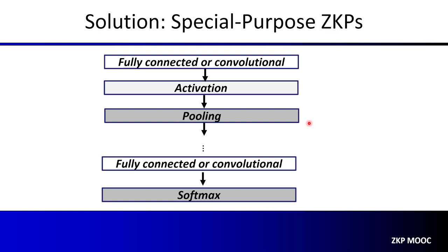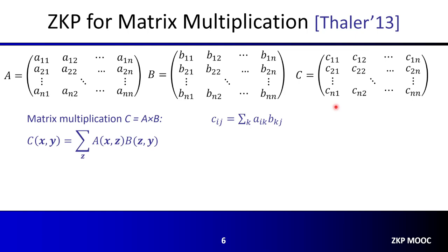The potential solution is to actually design special-purpose zero-knowledge proofs for common computations involved in machine learning algorithms. For example, in a neural network we have fully connected layers with matrix multiplications, convolutional layers with 2D convolutions, and common activation functions like ReLU, softmax, sigmoid, and max pooling. If we can design special-purpose zero-knowledge proofs for these computations, we will have more efficient and scalable proofs for a large class of machine learning computations.